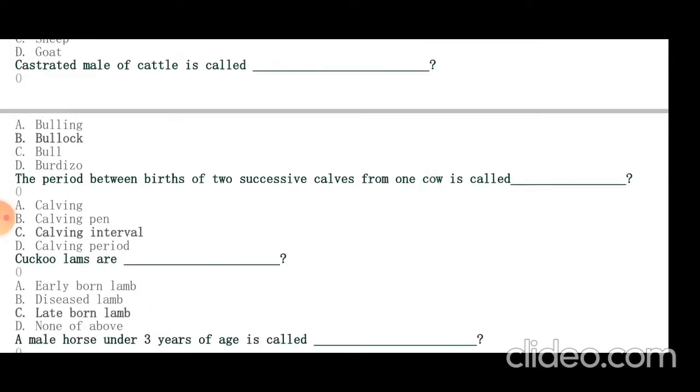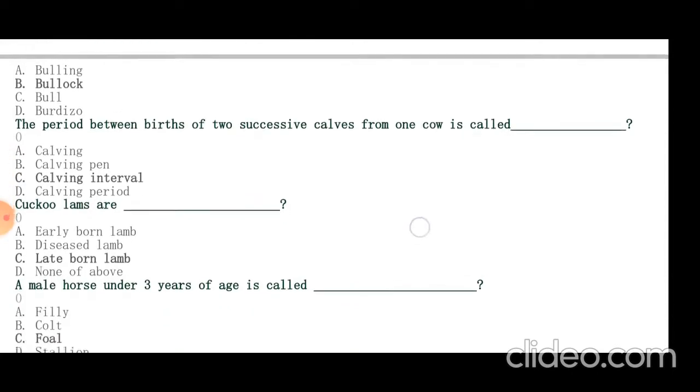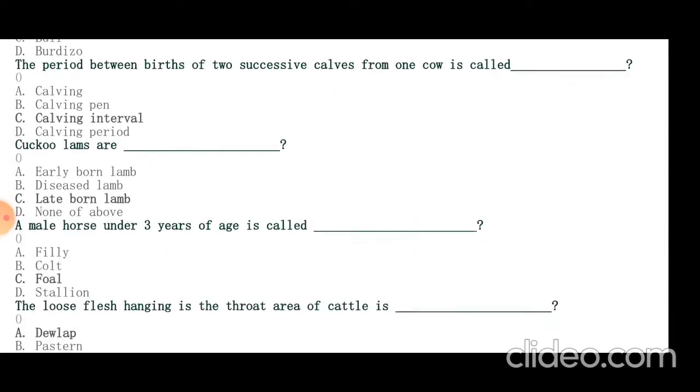Cuckoo lambs are late-born lamb. A male horse under 3 years of age is called foal. The loose flesh hanging below the throat area of cattle is dewlap. It is not in buffalo, so it is a differentiating point between cattle and buffalo.